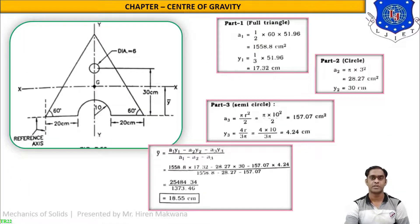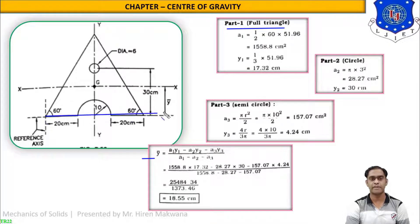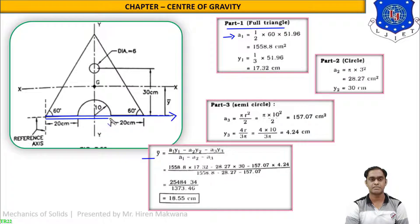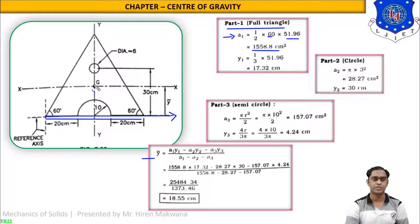For y-bar we take part 1 as the full triangle. We need the x-axis as reference. Area A1 = (1/2) × base × height = (1/2) × 60 × 51.96 = 1558.8 cm². The CG of a triangle is at h/3 from the base, so y1 = 51.96/3 = 17.32 cm.